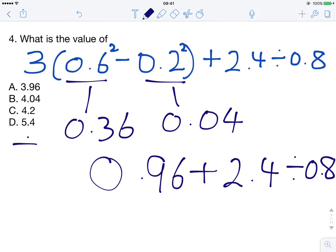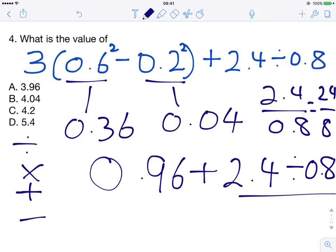Recalling BODMAS, what we'll do next is the division here. 2.4 divided by 0.8 is the exact same as 24 divided by 8. They're equivalent fractions. If you think of 2.4 divided by 0.8, you can rewrite it as a fraction. That's exactly the same as 24 divided by 8. It's just that both the numerator and denominator have been divided by 10. But they're equivalent fractions.